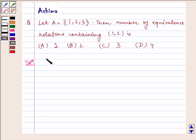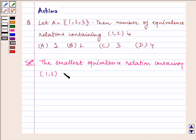Now let us write the solution. The smallest equivalence relation containing (1, 2) is R1 given by {(1, 1), (2, 2), (3, 3), (1, 2), (2, 1)}.